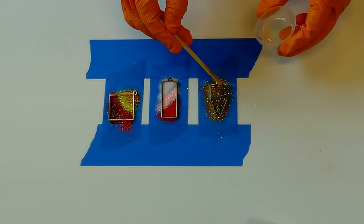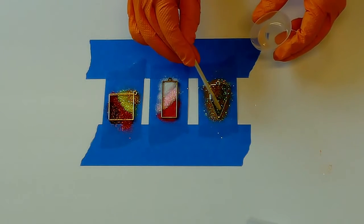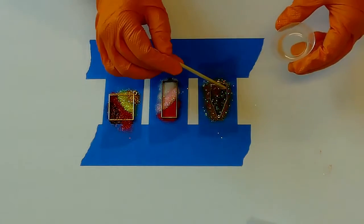The resin will soak through the glitter, and some glitter will float. The pendant will have a sealed finish on the top and bottom.